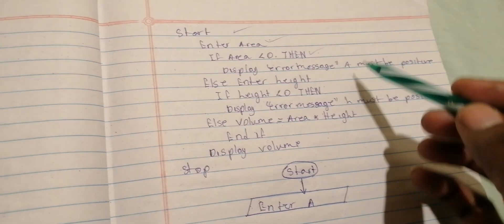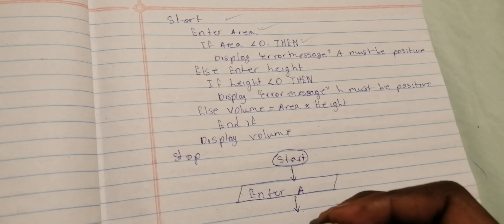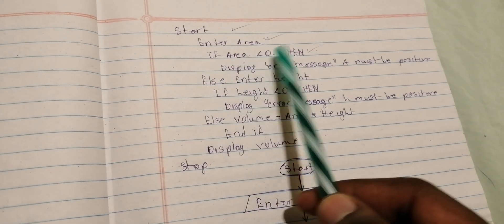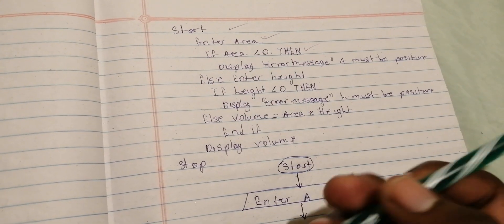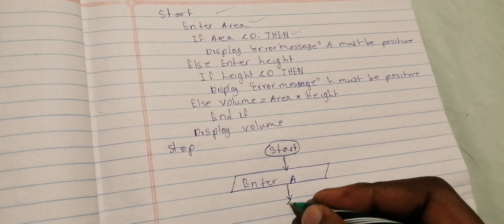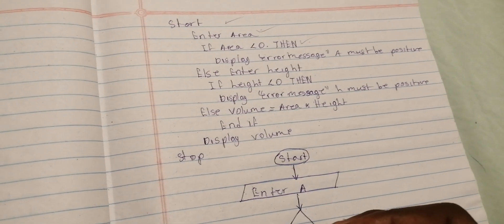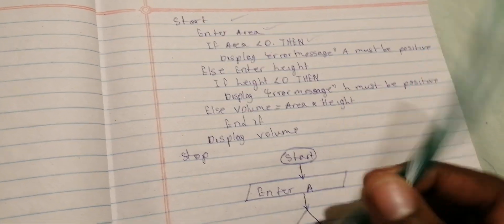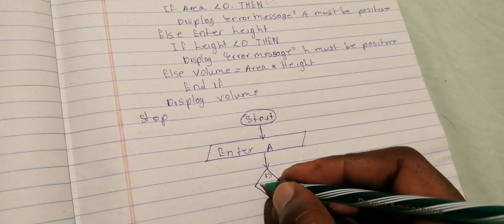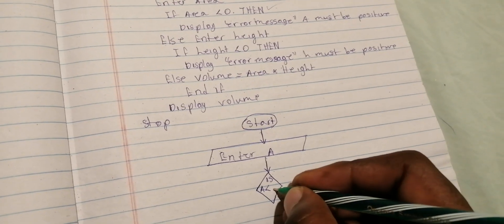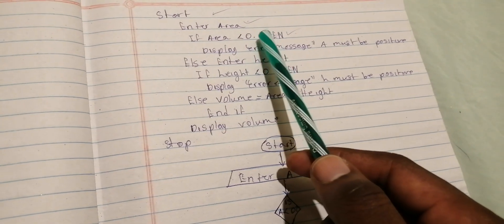We move on to the next step. Draw another arrow going down. The next line says 'If area is less than zero'. The keyword 'If' means there is a decision, so you draw a diamond shape. Inside the diamond you write the question: 'Is A less than zero?' and include a question mark.